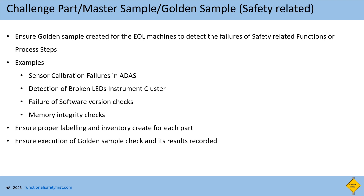Golden sample for safety related items: the product might have several safety goals or safety functions. A golden sample should be created for each safety goal or safety function. Create golden samples for unique safety cases, as it is not possible to maintain a large number of golden samples in manufacturing. Some examples for golden samples are: sensor calibration for any ADAS ECU — failures in sensor calibration can impact ADAS functionality, and a golden sample with sensor calibration failure can be used to verify the EOL machines detect the sensor calibration failure and reject the part. Similarly, an instrument cluster with broken LED, or a product with corrupted software version, corrupted EEPROM, or corrupted ROM can be used. Once golden samples are identified, ensure proper labeling of each master sample for better traceability and create a dedicated inventory at the manufacturing facility for each faulty part. Ensure periodic execution of golden sample checks for all safety related functions during manufacturing and record the results.